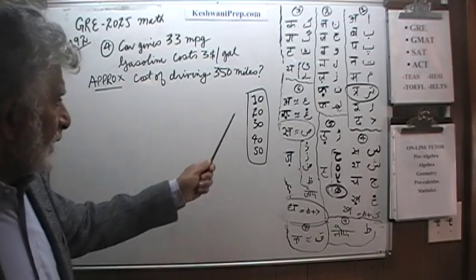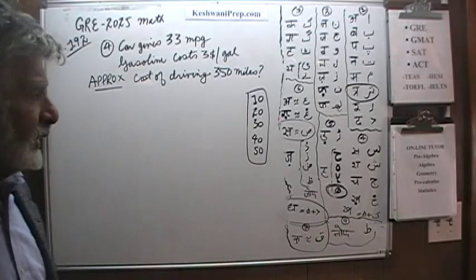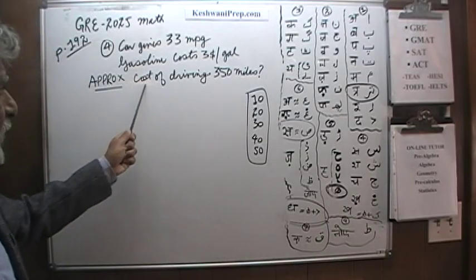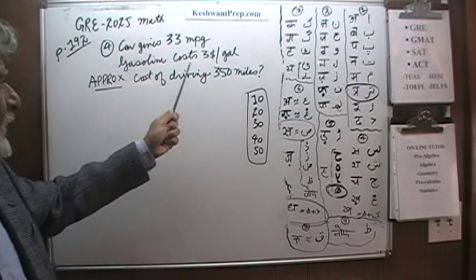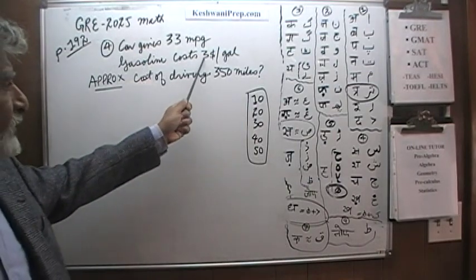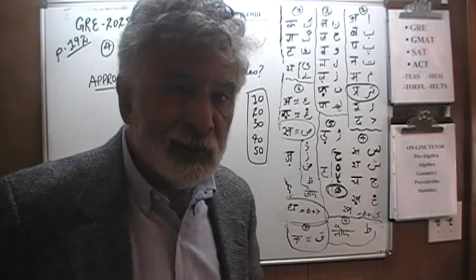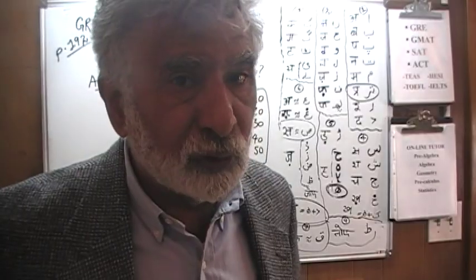Here the answer choices are 10, 20, 30, 40 and 50. We are looking for approximate cost of driving 350 miles. We are told that the gasoline is going to cost us $3 per gallon. The actual question has the gasoline cost at $2.95.